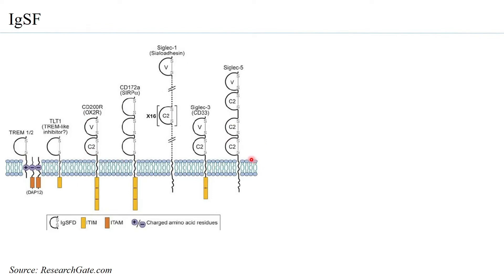There are several types of IGSFs. The length and size of IGSFs can vary depending on how many immunoglobulin folds or domains are present. There is typically a transmembrane portion and a cytoplasmic domain. In many cases the cytoplasmic domains are important because they elicit signal transduction leading to specific functions in the immune cell.